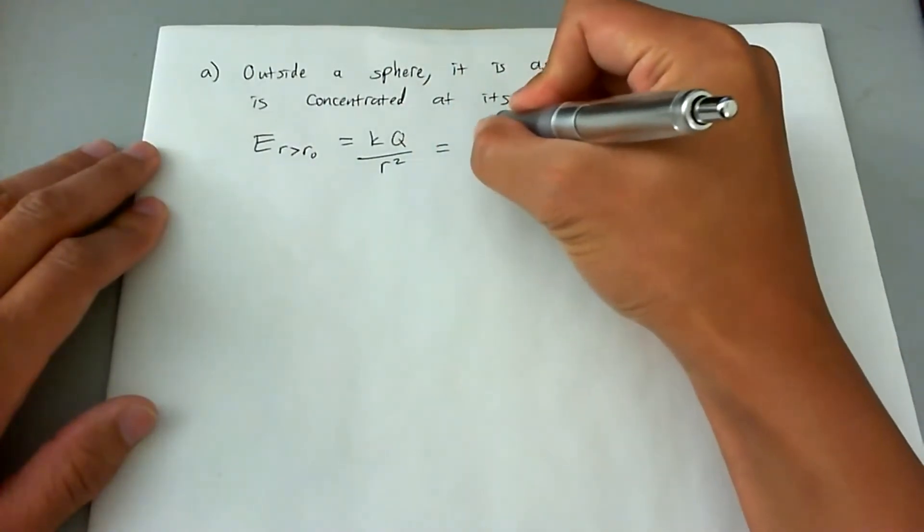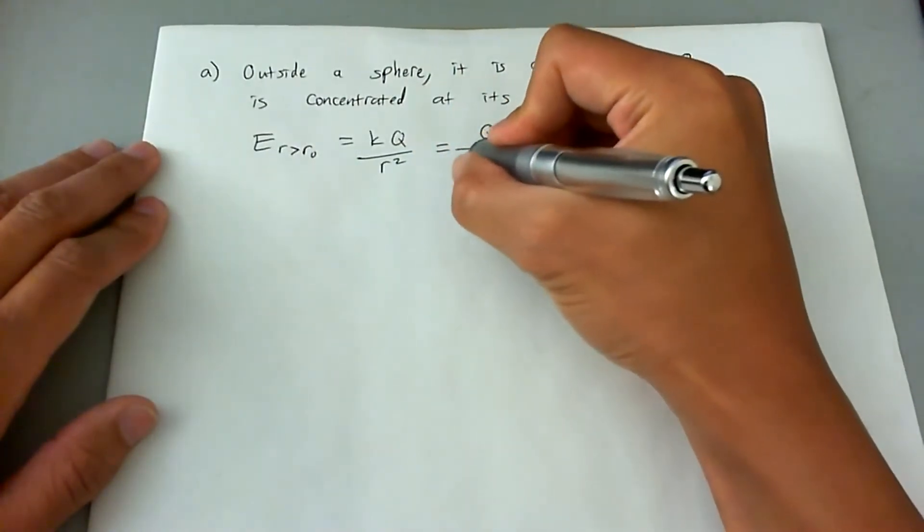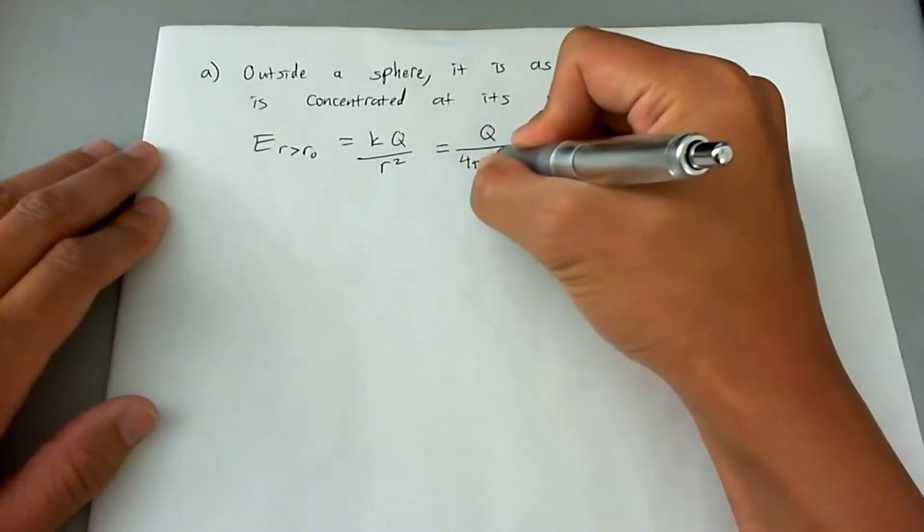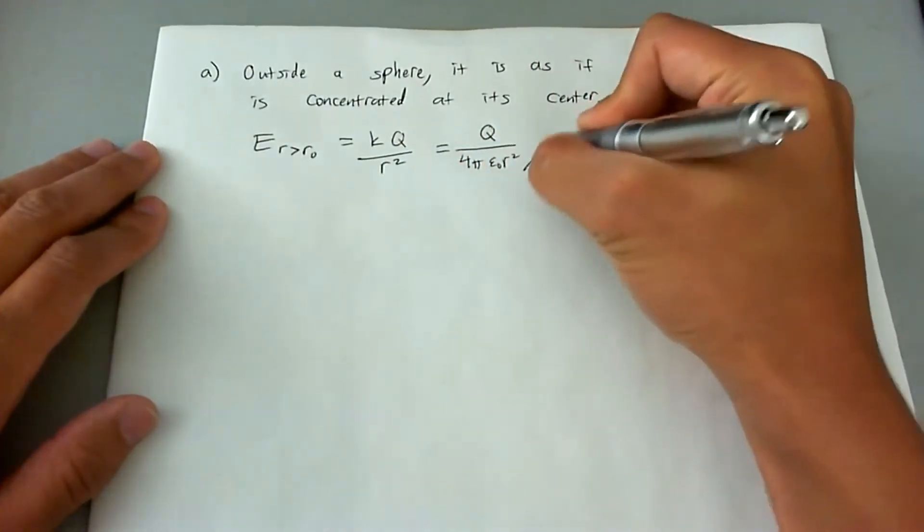And you can now write it also in terms of epsilon naught. So you could say it's Q over 4π epsilon naught r squared. And we're basically done.